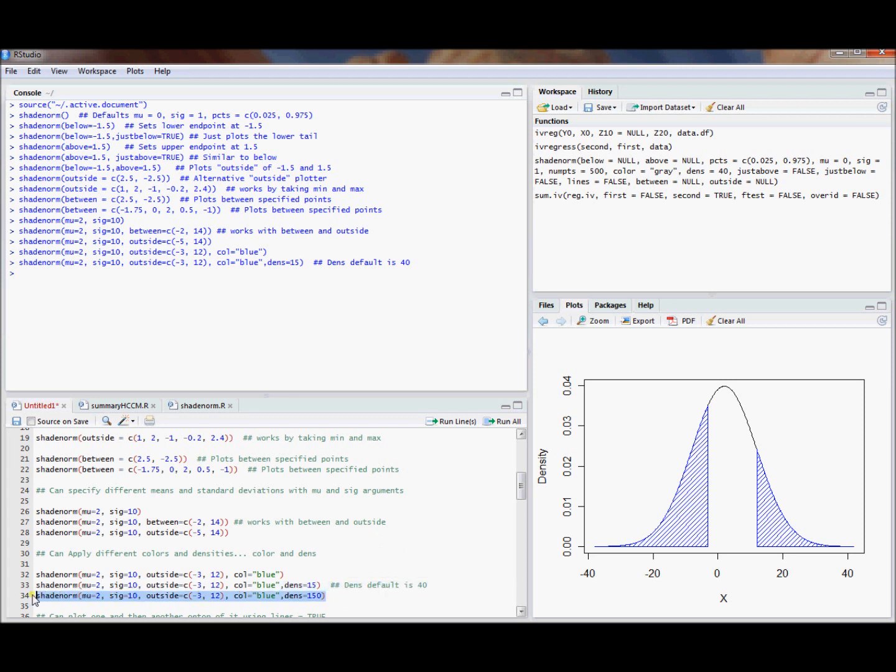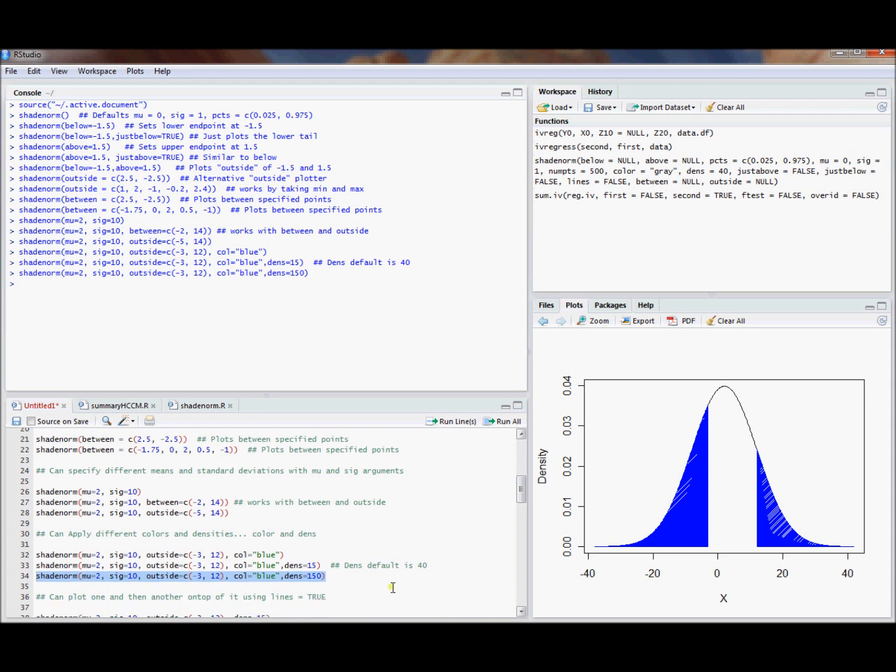Or maybe you want something closer to a solid color. So make the density equal to 150. You can play around with whatever densities you wish, and you can basically get this plot to look however you want as far as colors and plot density.